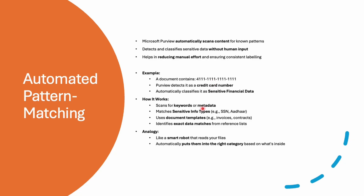Automated pattern matching works by looking for keywords, matching sensitive info types like Aadhaar numbers or SSN numbers, using templates like invoices or contracts, and recognizing exact matches from a database. We can think of it as a smart robot that reads files and puts them in the right category based on what is inside.